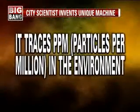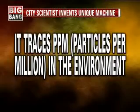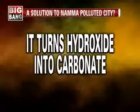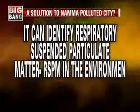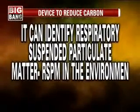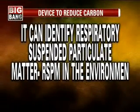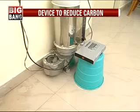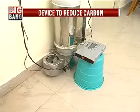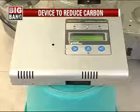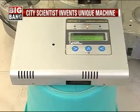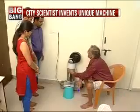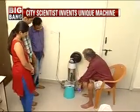It traces the particles per million in the environment and turns hydroxide into carbonate. It can identify Respiratory Suspended Particulate Matter — RSPM — in the environment. This machine occupies an area of 0.3 square meters, is made of steel, has a white screen inside, requires a 0.5 HP pump to work, and uses about 1 unit of electricity per day.